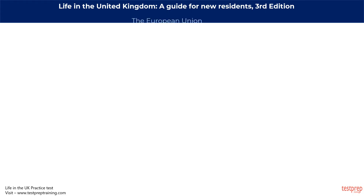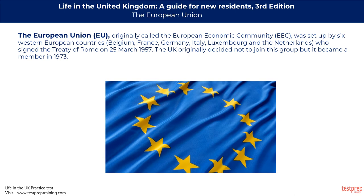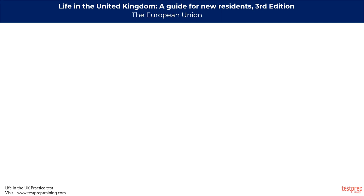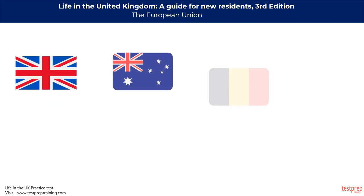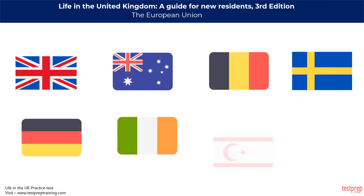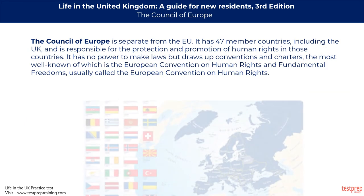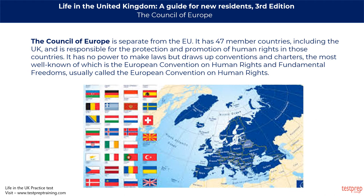The European Union, originally called the European Economic Community, was set up by six Western European countries who signed the Treaty of Rome on 25 March 1957. The UK originally decided not to join but became a member in 1973. There are now 27 EU member states, with Croatia set to become a member in 2013. The Council of Europe is separate from the European Union, with 47 member countries including the UK, and is responsible for the protection and promotion of human rights. It draws up conventions and charters, the most well known being the European Convention on Human Rights and Fundamental Freedoms.